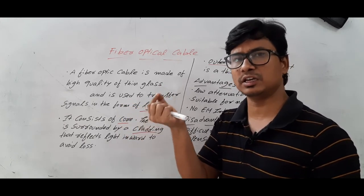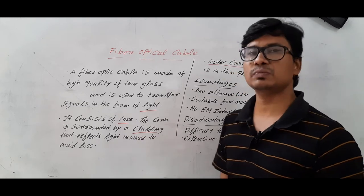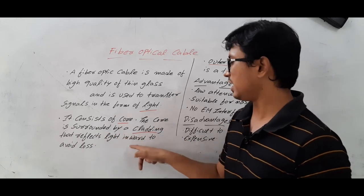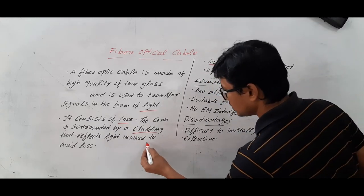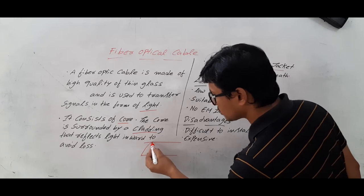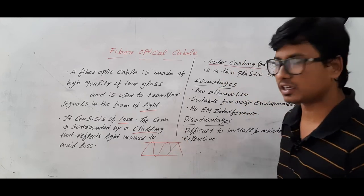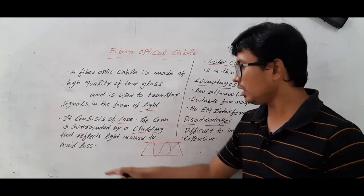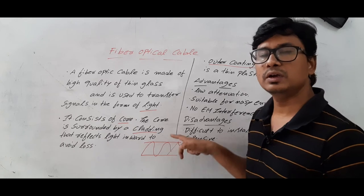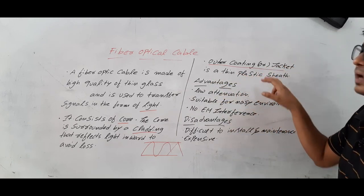The core is used to transfer data in the form of light. The purpose of the cladding is that it surrounds the core and reflects the light inwards to avoid signal loss. When light is transferring through the core and starts to escape, the cladding reflects it back so that you do not lose any signal. The cladding helps us to avoid signal loss.